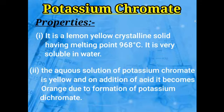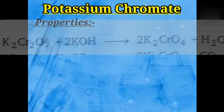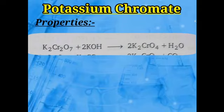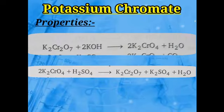Another property: the aqueous solution of potassium chromate is yellow, but if acid like H₂SO₄ is added, it becomes an orange colored solution. This is because potassium chromate reacts with H₂SO₄ to form potassium dichromate, which is orange. This means potassium chromate and potassium dichromate are inter-convertible — reacting with alkali gives chromate, and with acid gives dichromate.